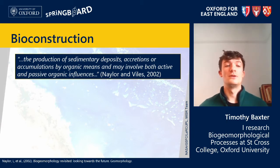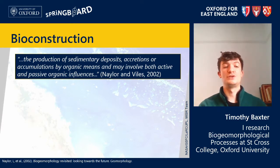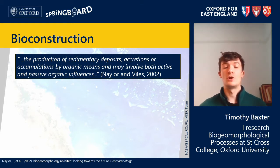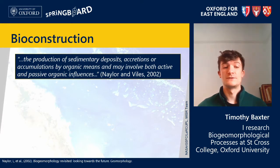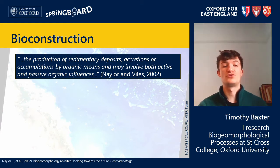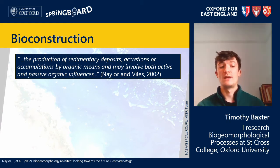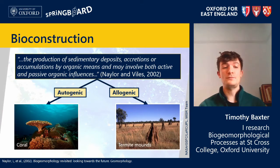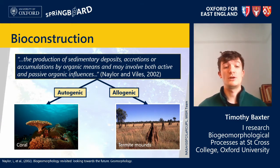As suggested in the definition, bio-constructions can develop in a variety of ways. Firstly, organisms can produce material themselves. This is the case for coral reefs, which are formed from colonies of coral polyps that are held together by biogenic calcium carbonate secreted by the polyps themselves. Over time, new coral will grow on much older reefs, creating large bio-constructions which can be several thousands of years old and thousands of kilometres in length. This type of bio-construction is autogenic, as the biogenic landform is modified for an organism's own structure using living and dead tissue.